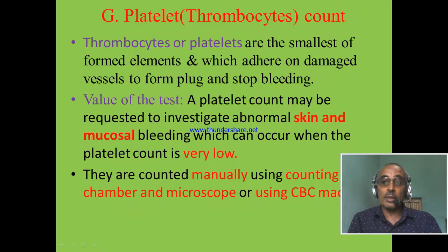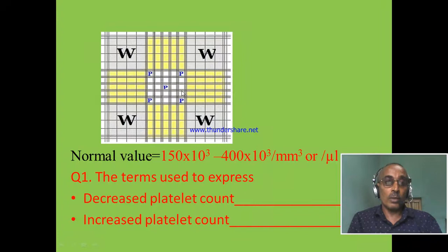When we are counting platelets using the manual method, we use the Neubauer chamber and we select 5 small squares at the middle of the Neubauer chamber, and platelets are counted from these small squares.